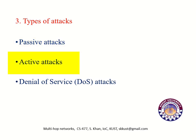Active attacks are used to disturb the normal flow of network traffic. They are used to drop network packets, modify the data in packets, or misdirect the network traffic. Denial of service attacks are used to deny one or more network related services. In DoS attacks, legitimate users are prevented from using network or network resources.